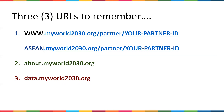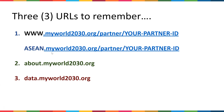There are three URLs for you to remember. If you are from an ASEAN country, the URL is asean.myworld2030.org. If you're not from an ASEAN country, you have to use the www version: www.myworld2030.org.